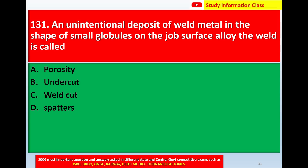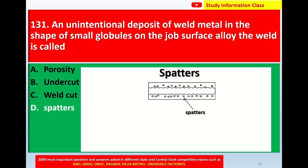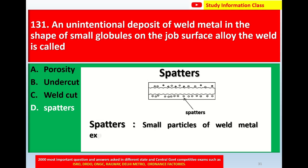Question number 131: An unintentional deposit of weld metal in the shape of small globules on the job surface. The weld is called — option A porosity, option B undercut, option C weld cut, option D spatters. The correct answer is spatters.